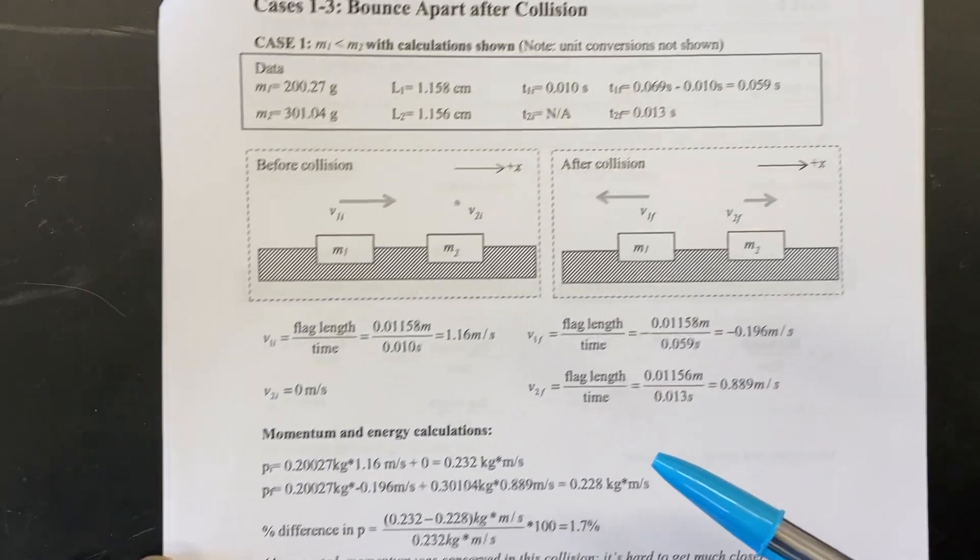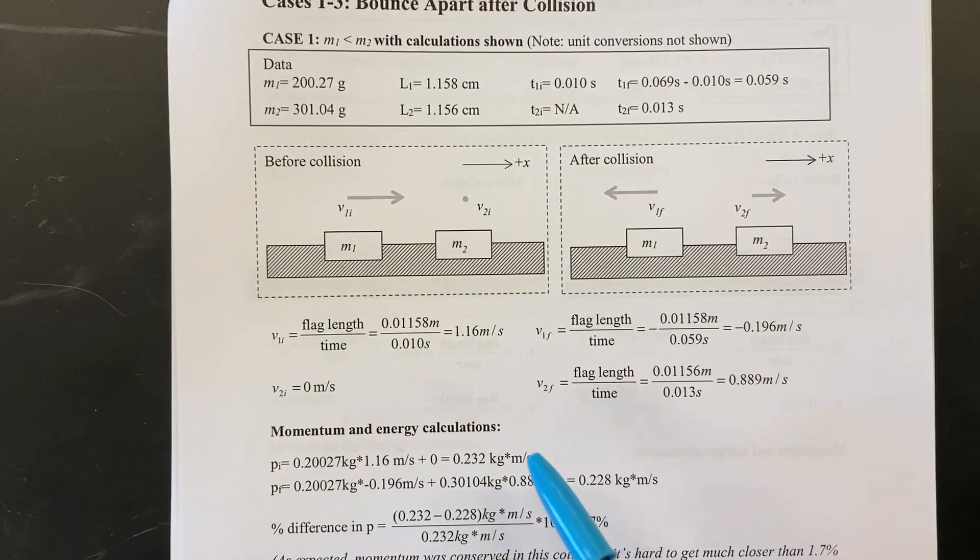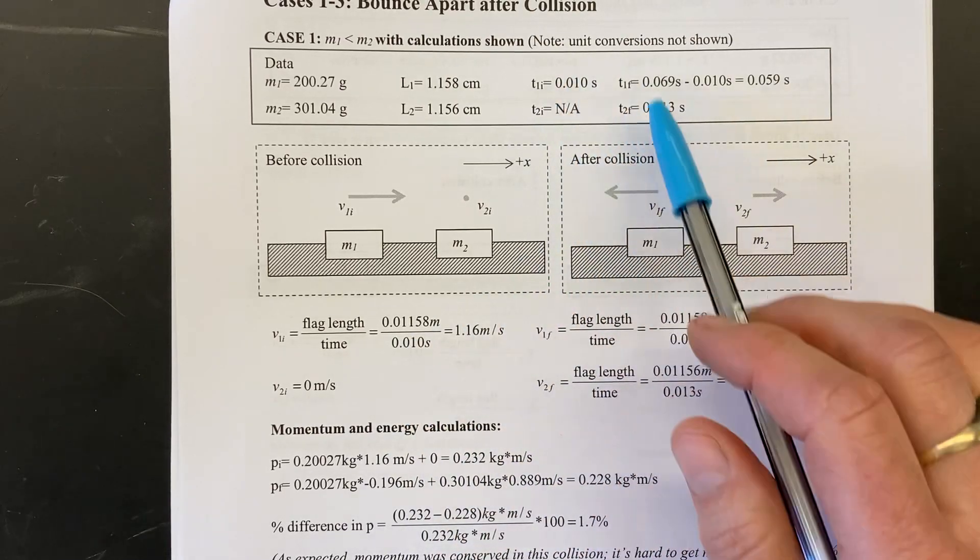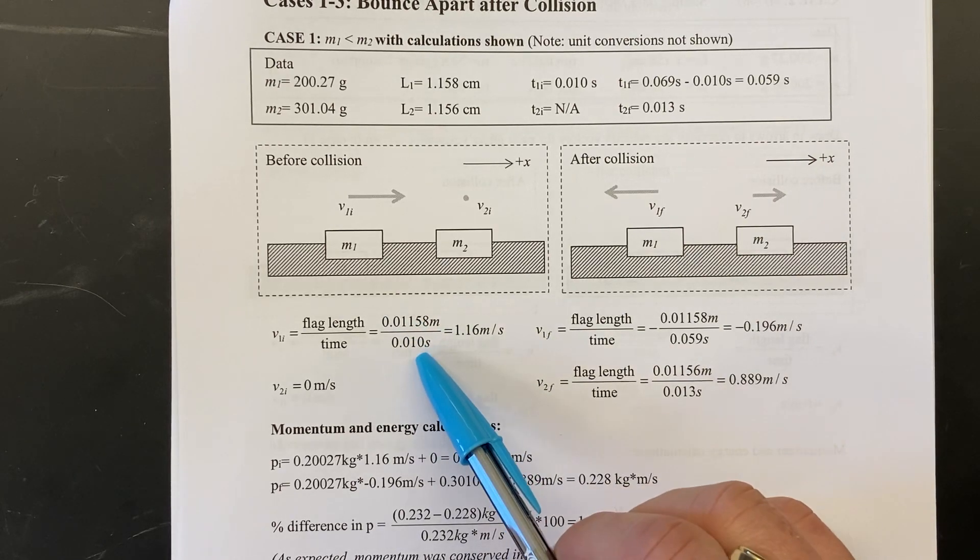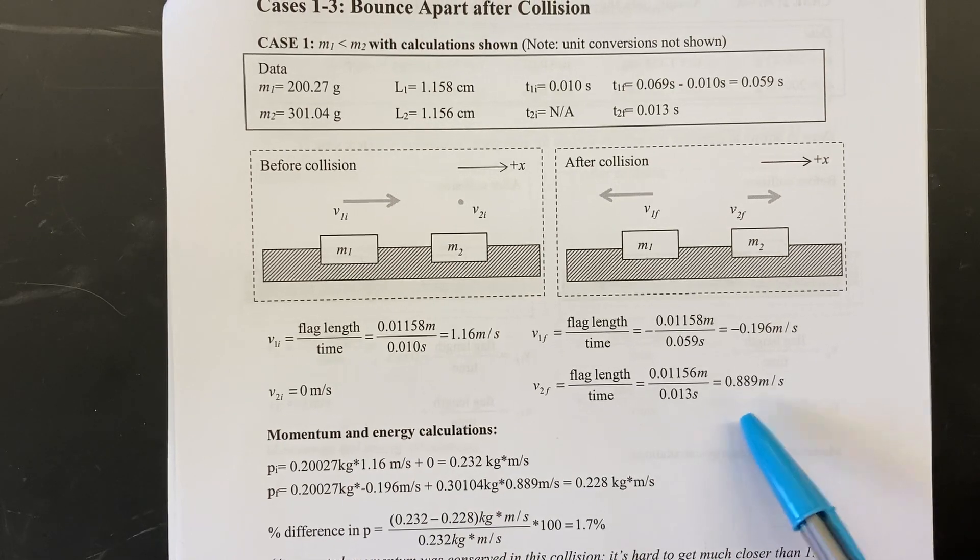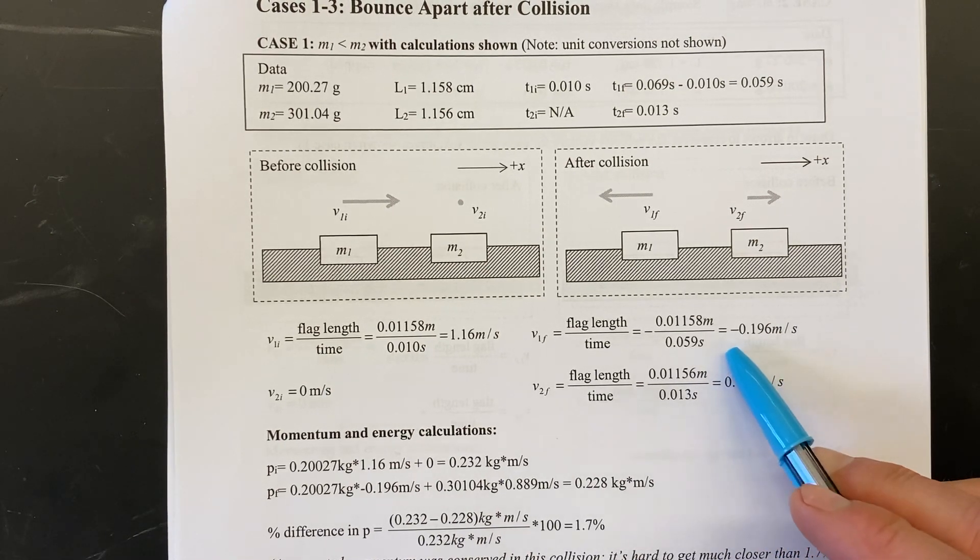Okay, so to figure out the velocities, all we need is the flag width and the time it took. So we have our three times up here and we just divide the flag width by the time. Okay, and that's done for all three. Note that glider one was moving to the left after the collision so it has a negative velocity.